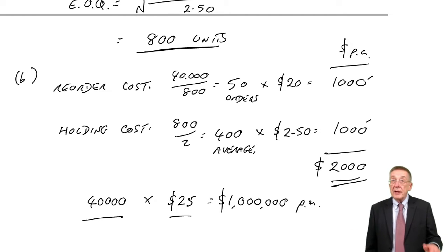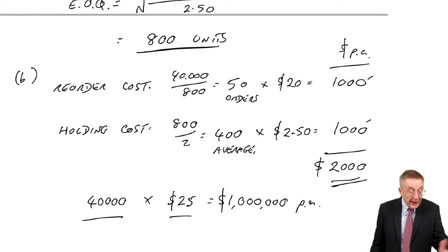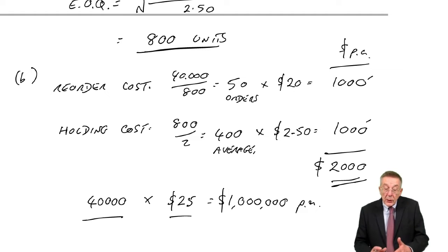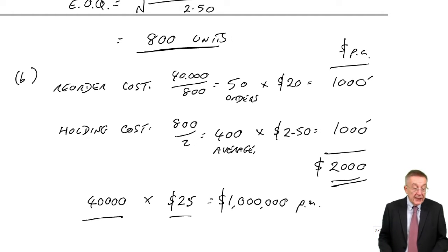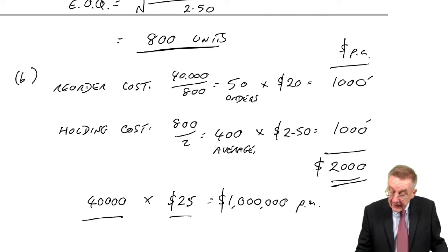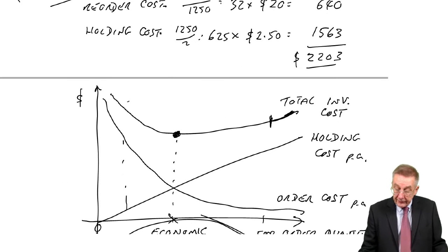But if we're prepared to order 5,000 or more each time, we'll have a 1% discount. 10,000 or more, we'll get a 1.5% discount. Now we know the inventory costs are minimized at 800. If we ordered 5,000 each time, then sure, think back to that graph. The inventory cost, 800 was the minimum. If it's 5,000, the inventory cost is bound to be higher.